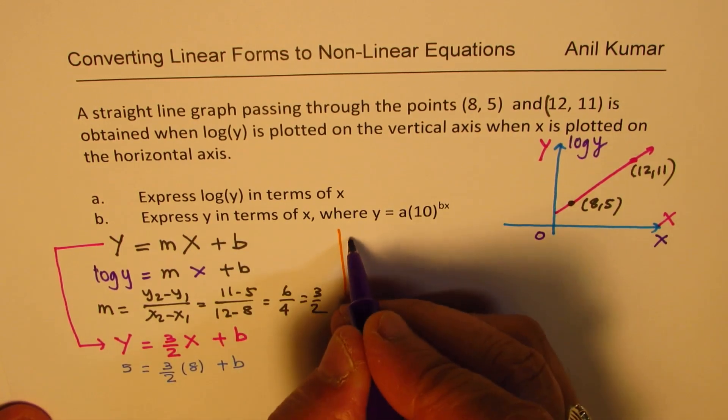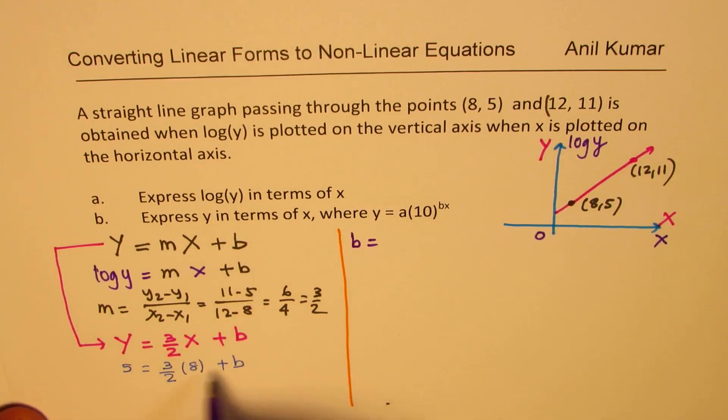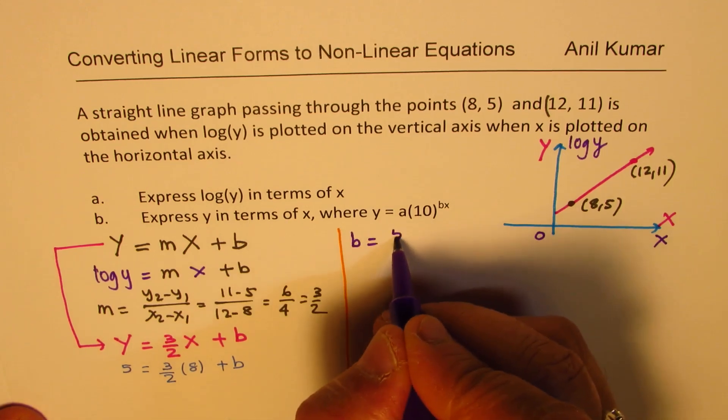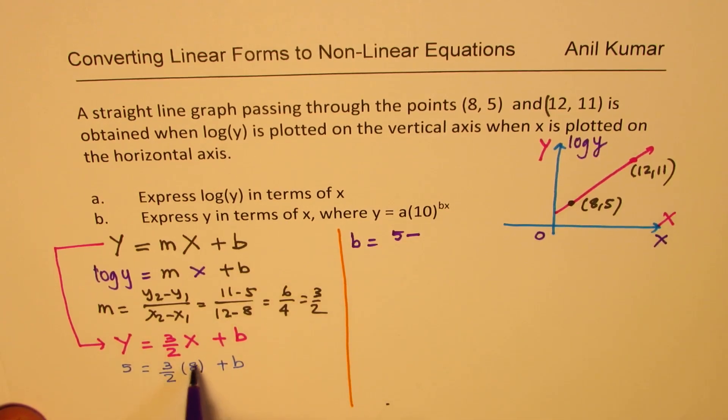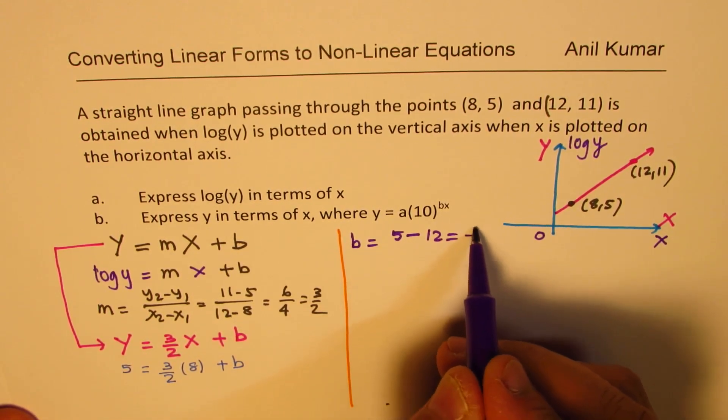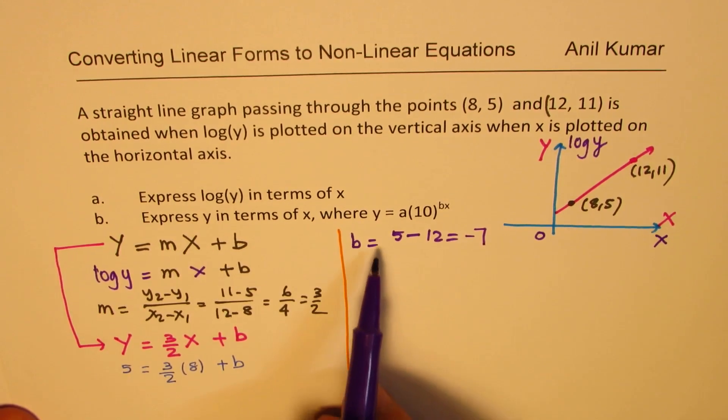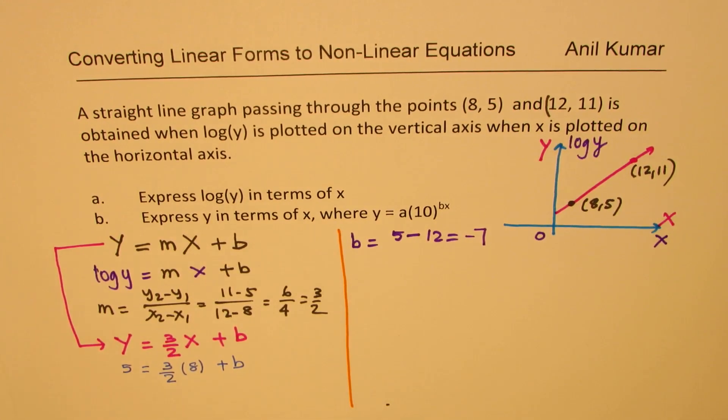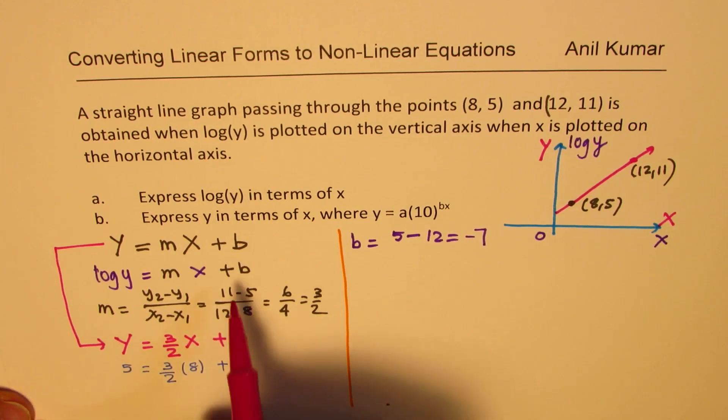So let us take it on the right side. So from here, we know b is equal to 5 minus this is 12, dividing 4 times 3, or we get the value of b as -7. So we get the value of b as -7.